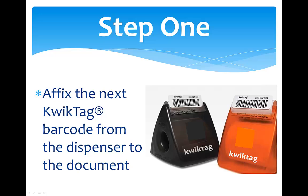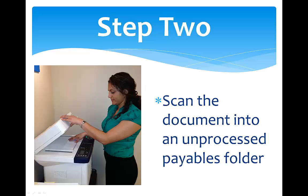First, simply affix the next QuickTag barcode from the dispenser to the document. The scanned item will appear in the Unprocessed Payables folder. Although QuickTag has a proprietary scanner available for purchase, any scanner can be used, even the ones that are part of a multi-use office machine.